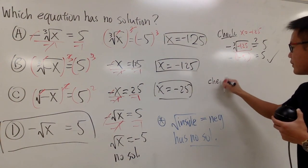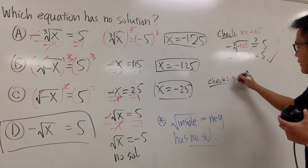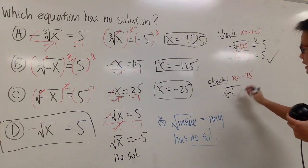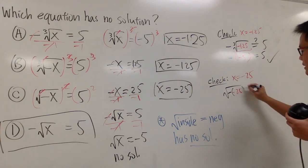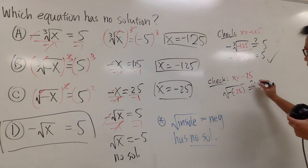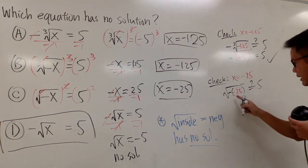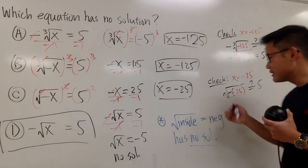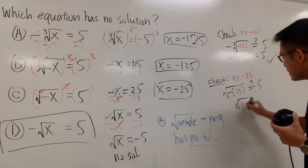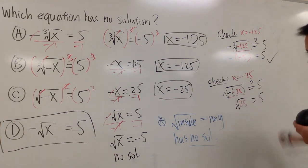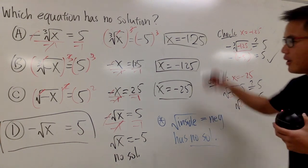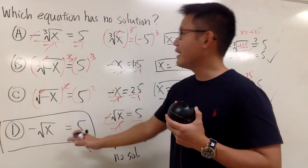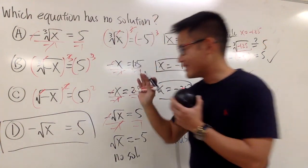Here's a quick check. When x equals negative 25 in the original equation, you get square root of negative negative 25. Negative times negative is positive, so you get square root of positive 25. Do we get 5? Yes, we do. So all the other equations have an answer, but Choice D has no solution — and that's the answer to the original question.